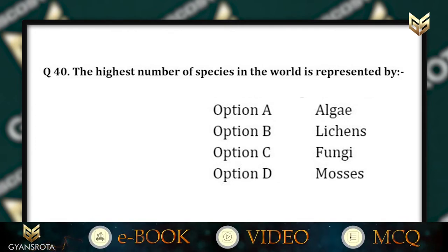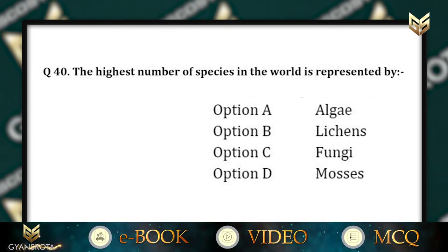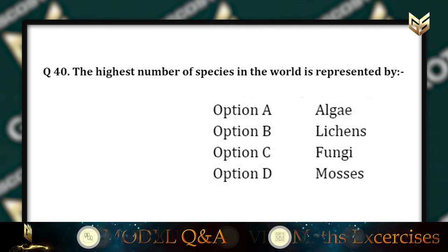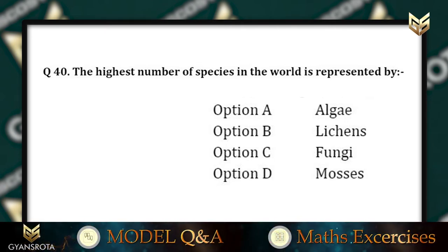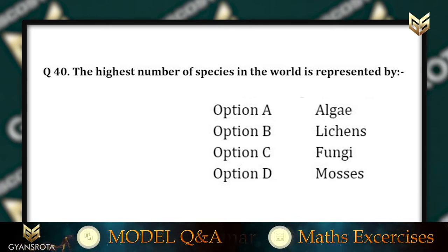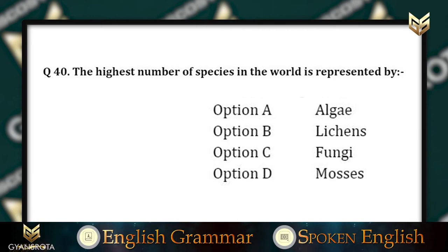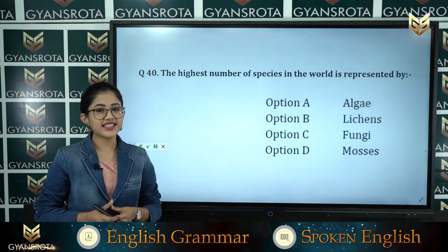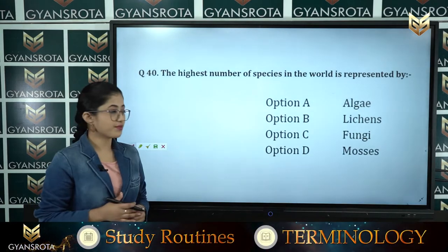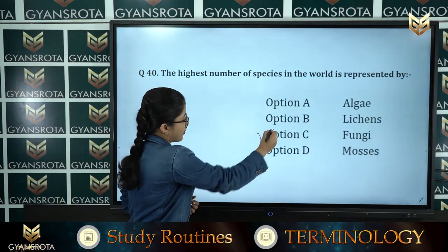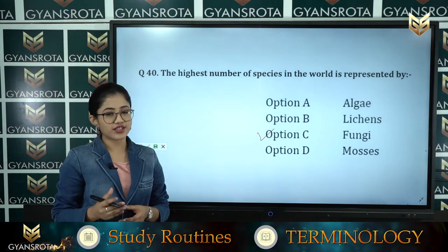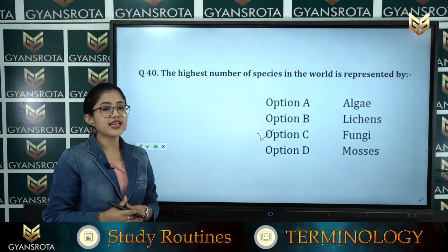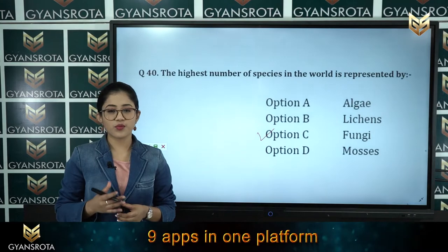Question 40: The highest number of species in the world is represented by option A: Algae, option B: Lichens, option C: Fungi, option D: Mosses. The correct answer is option C, Fungi, which has the highest number of species in the world.